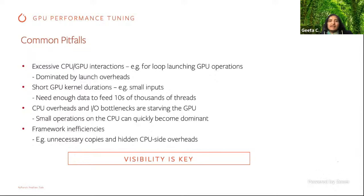Other bottlenecks include CPU overheads or I/O bottlenecks where the GPU is just waiting for data to be loaded, which can be starving the GPUs. In your framework or model code itself, there can be inefficiencies — you could be unknowingly copying data from CPU to GPU every time, for example if you're just saving your tensors, and that can incur additional costs.